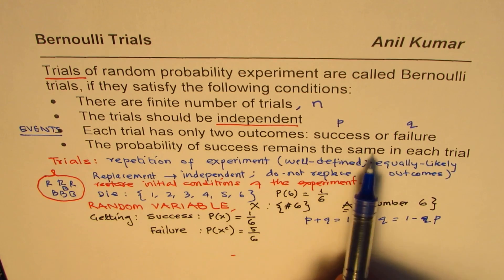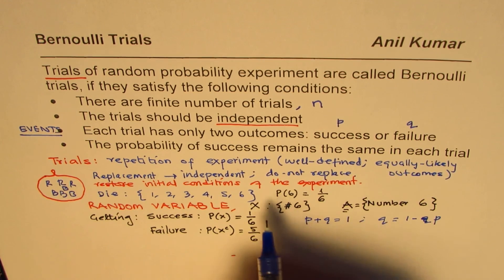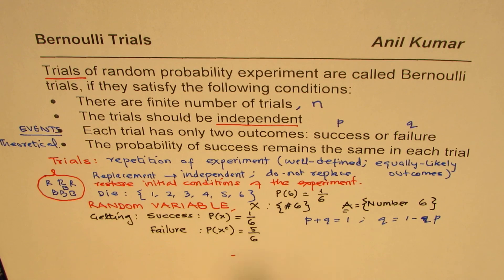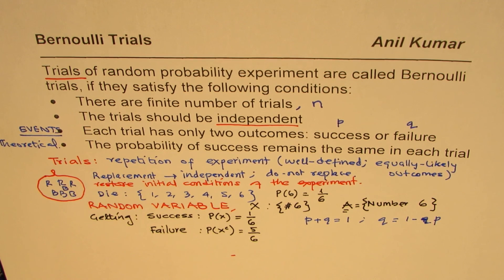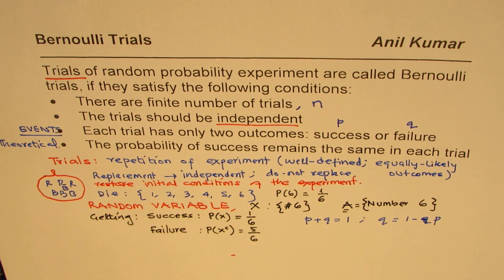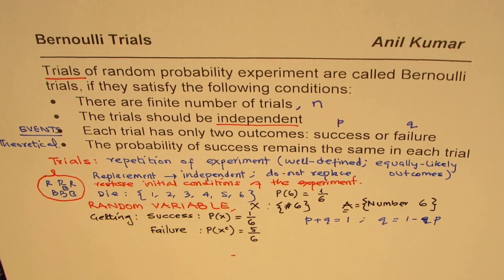Next, the probability of success remains the same in each trial. If I perform this experiment over and over — let's say 20 times — we are always talking about theoretical probability. The probability of getting six is one over six in each and every trial. So Bernoulli's trial: we have an experiment whose output could only be success or failure. Any experiment can be treated as a Bernoulli's experiment provided you could meet these criteria, and they are not difficult to meet.